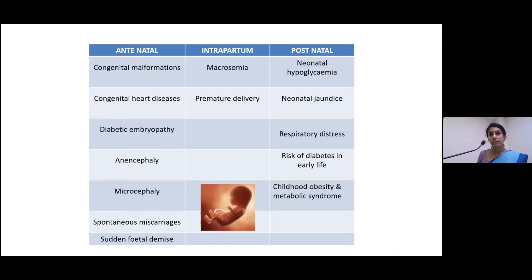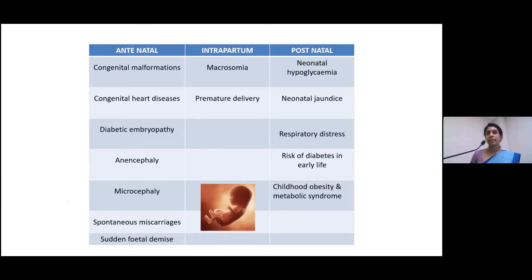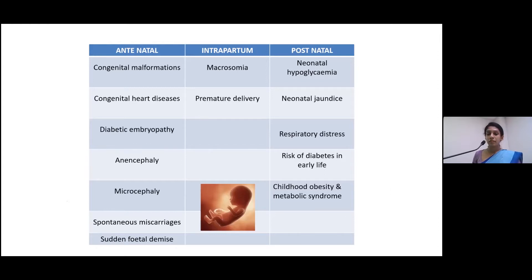What is the impact of uncontrolled disease? It starts on the fetus from day one of gestation. It can complicate the pregnancy at any point, complicate the labor, and the immediate postnatal period. Not only short-term — even after delivery, the offspring of a mother with diabetes will develop a higher risk of diabetes in later life, with metabolic derangements and childhood obesity.